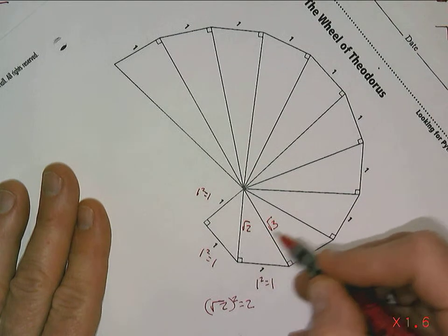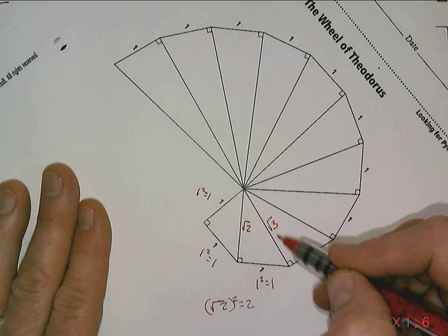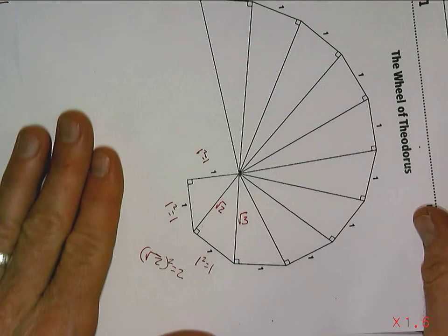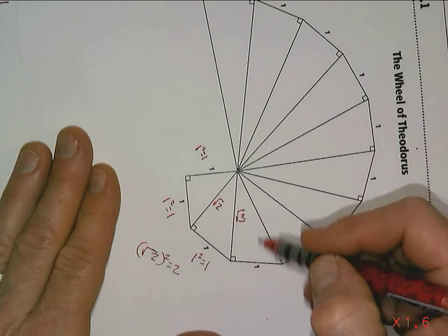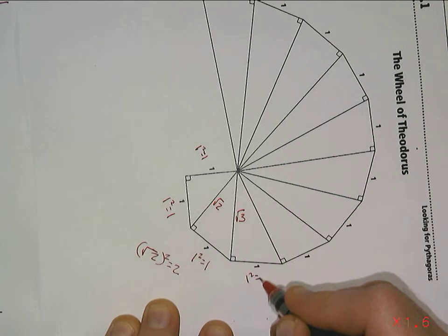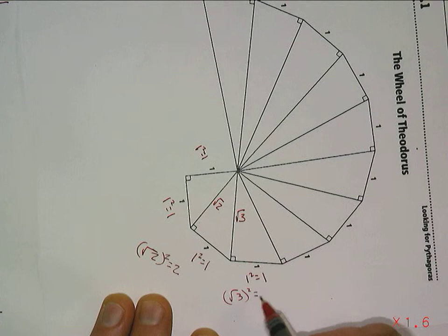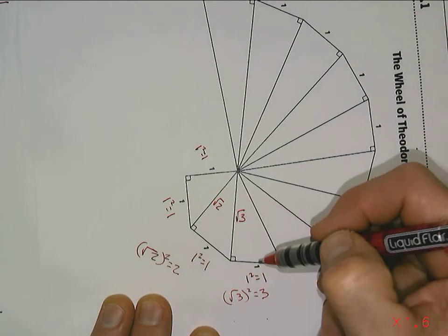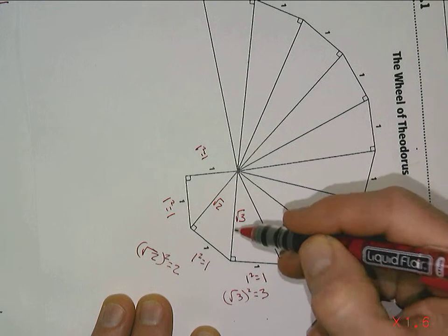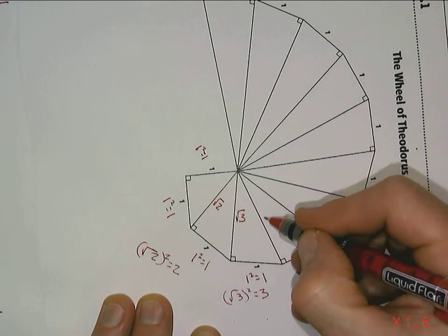If you're not following how these lengths are found, you may want to review previous lessons on the Pythagorean theorem. You might notice a pattern forming with Theodorus' wheel: this side length remains one, so one squared is still one. If I take the square root of three and square it, I get three. So a squared plus b squared equals c squared: one plus three is four, so c squared equals four.